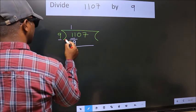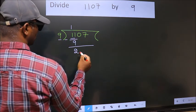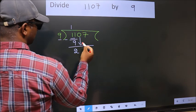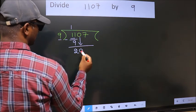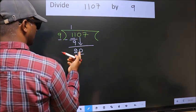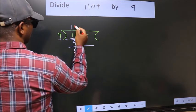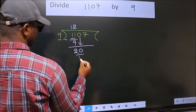Now we should subtract. We get 2. After this, bring down the beside number. So 0 down. So 20. A number close to 20 in the 9 table is 9 2s 18.